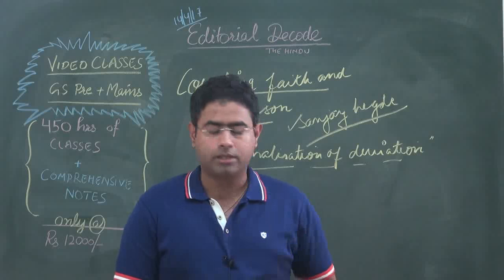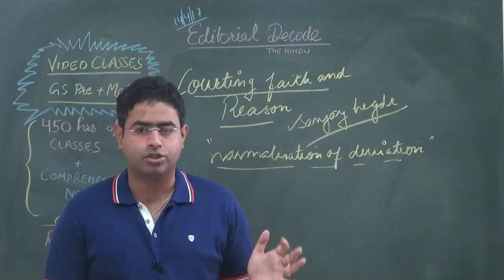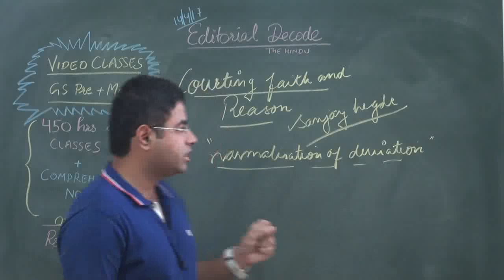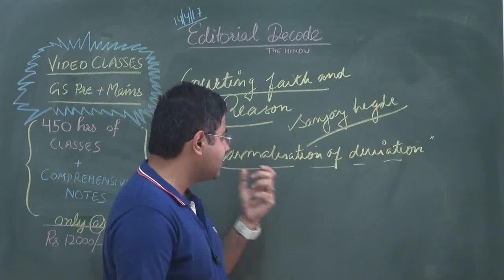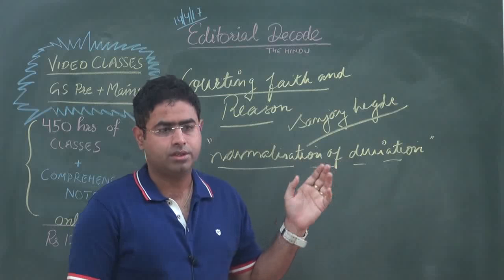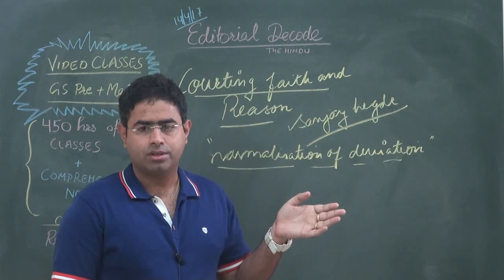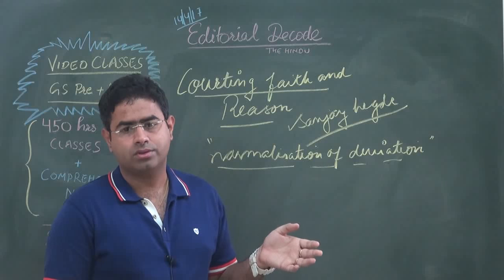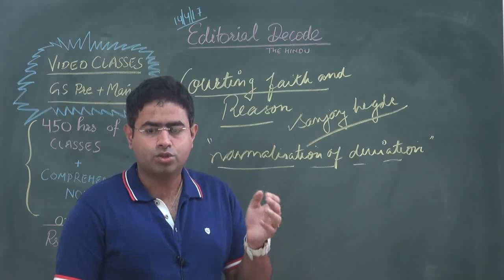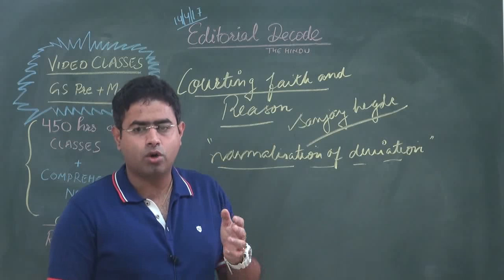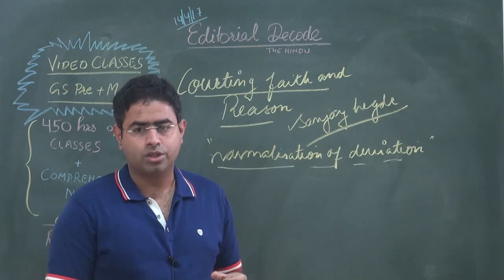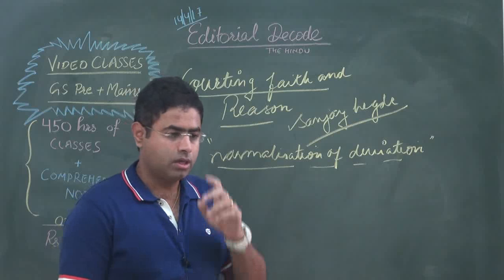This is also important for Political Science, Sociology, and Public Administration optional students. This editorial is about a very important concept: normalization of deviation. This normalization of deviation has been discussed in the context of cow slaughtering, which should not have been a part of the Indian Constitution.